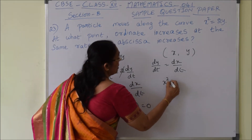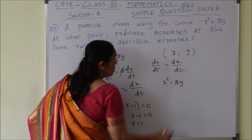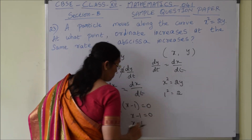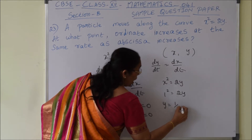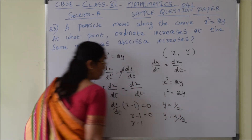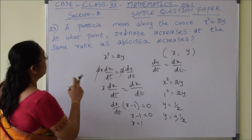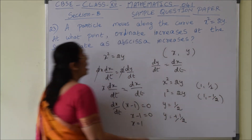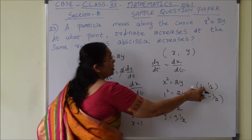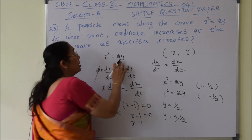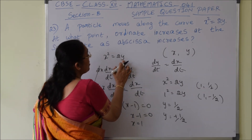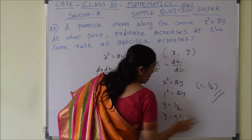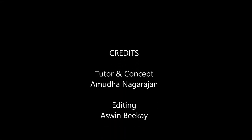When x equals 1, substituting into the curve equation x² equals 2y: 1² equals 2y, so y equals 1/2, or y equals plus or minus 1/2. The points would be (1, +1/2) and (1, -1/2). However, when we substitute y equals minus 1/2, x² becomes negative, which is impossible. Therefore the point is only (1, 1/2).